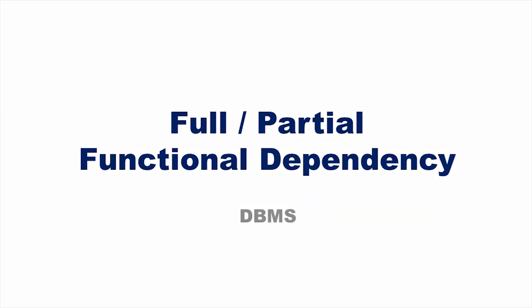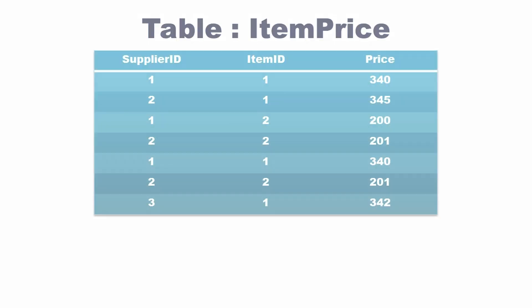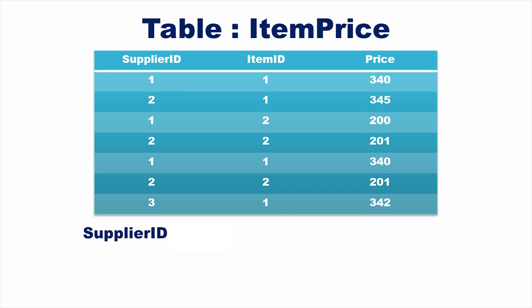In this video, let us learn about fully functional dependency and partial functional dependency. Consider the table item price — it has three attributes: supplier ID, item ID, and price. Supplier ID and item ID together determine price; this is a functional dependency on the table item price. Let us check whether supplier ID alone determines price.